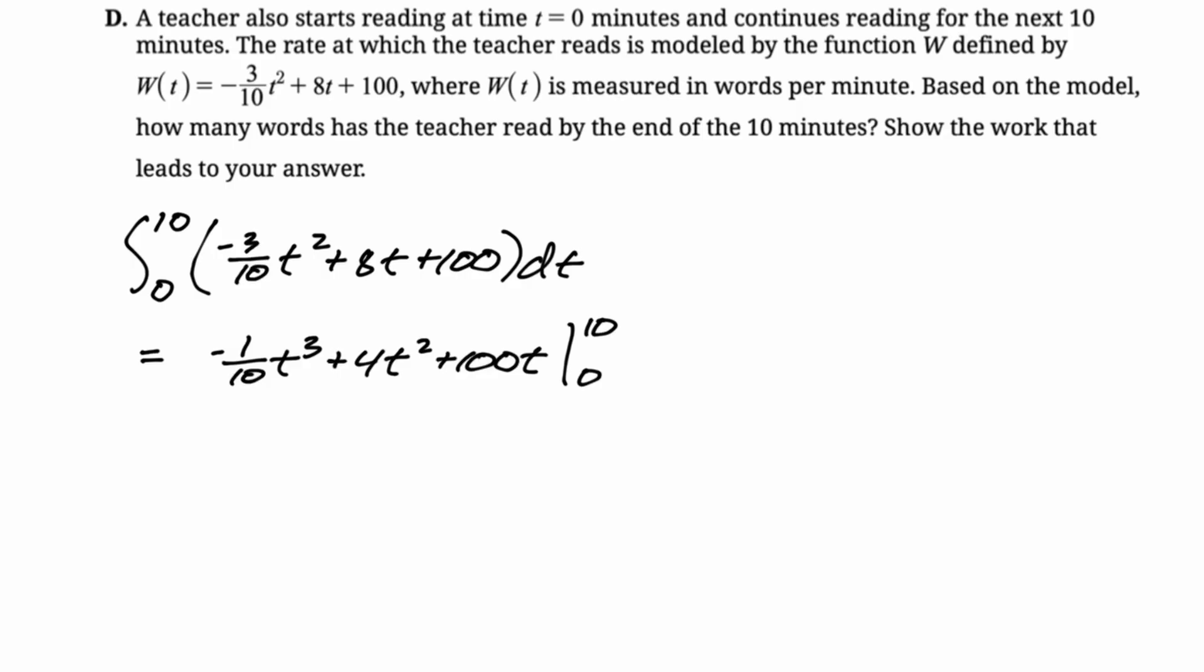So we're going to use the fundamental theorem here. We're going to plug in. So first you plug in 10. So negative 10 cubed over 10 plus 4 times 10 squared plus 100 times 10. And then I like to make it very clear what I'm doing. So I'm going to say minus, when you plug in zero, you just get zero. You should stop here because you don't need to simplify.